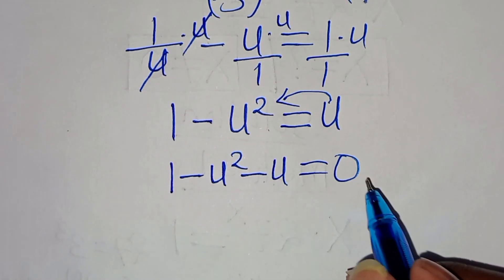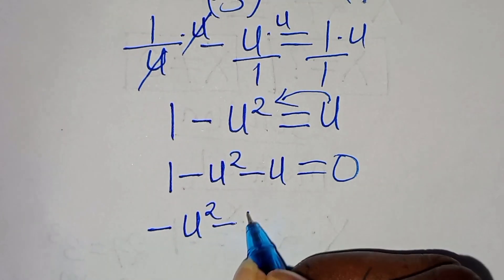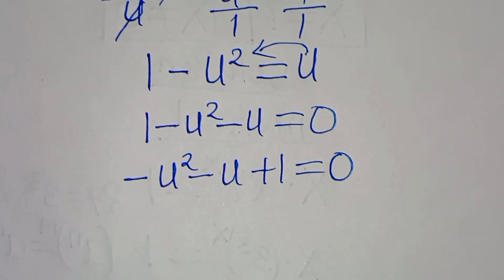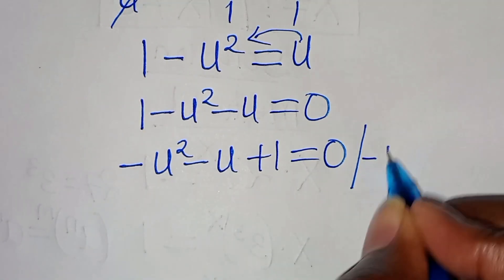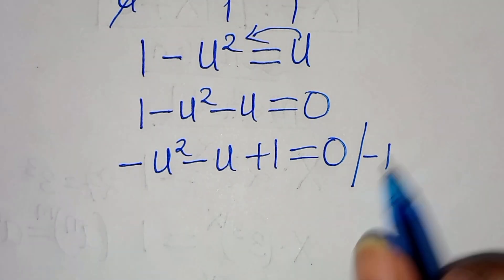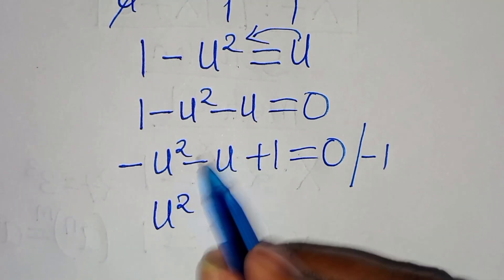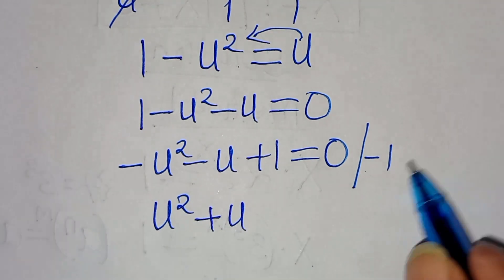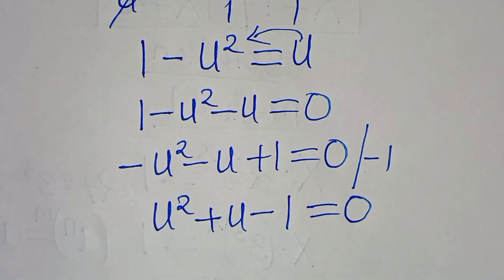Rearranging gives minus u squared minus u plus 1 equals 0. Dividing everything by minus 1, we obtain u squared plus u minus 1 equals 0. This is a quadratic equation with a = 1, b = 1, and c = −1.